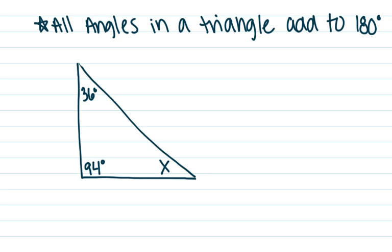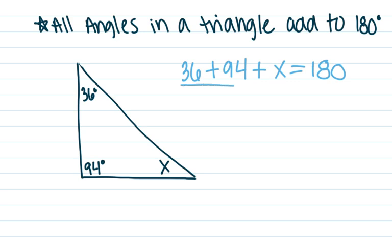We can use that fact to help us in our math. If they give us two of the angles in the triangle and we know they have to equal 180, we can find that missing third angle. So here in this example, if I have 36 degrees and 94 degrees, and I know that adding these three angles together they're supposed to equal 180, I have an equation I can solve. Adding together my two angles gives me 130 degrees, plus x equals 180.